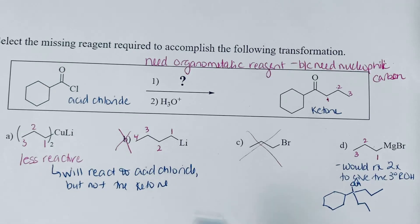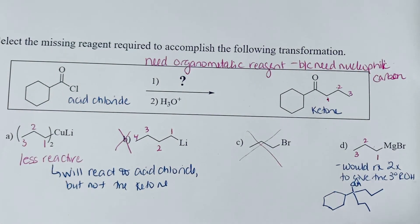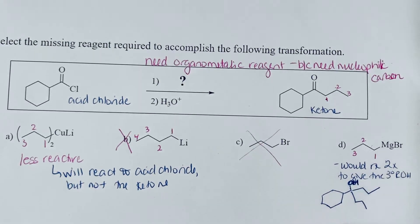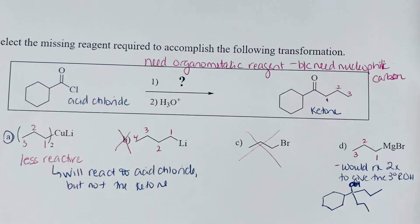So even if you only used one equivalent, you're probably still going to get a mixture of that. It's really hard to control stoichiometrically. So that would not be the reagent that you want to use. You want that less reactive organocuprate.